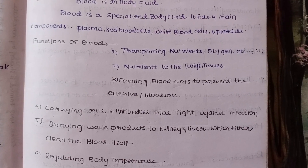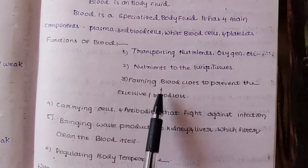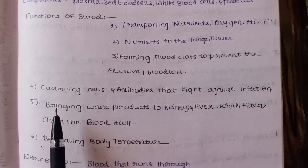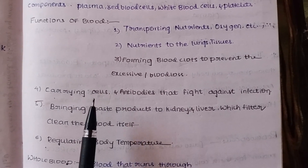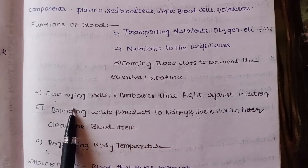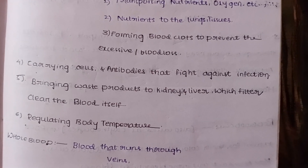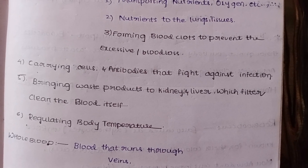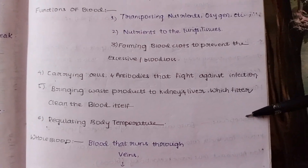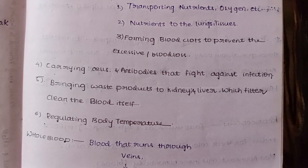Blood also carries different types of cells — RBC, WBC, and platelets. It carries antibodies that fight against infections. Generally, antibodies fight antigens, which are foreign particles, and the body releases these antibody cells. The next function is bringing waste products to the kidney and liver, which filter and clean the blood.